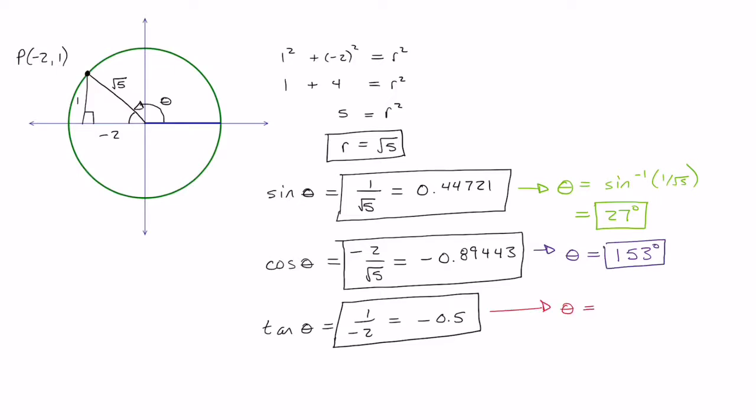The third ratio, if I go tan inverse of 1 over negative 2, I get negative 27 degrees. When I look at these three angles, 27 degrees, 153 degrees, and negative 27 degrees, what I notice is that angle theta in standard position is in the second quadrant. The only one that's possibly in the second, or that is in the second quadrant, is 153 degrees. So that is actually right. So theta is 153.